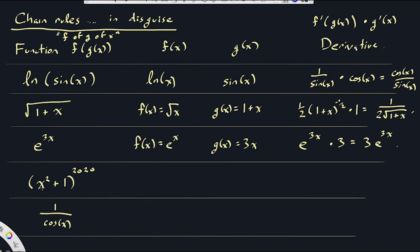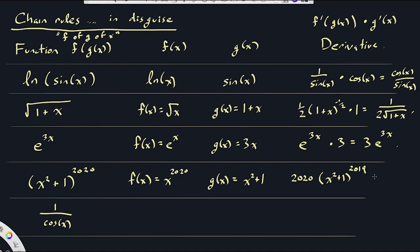For (x²+1) to the 2020th power: first compute x²+1, then raise to the 2020th power. So f(x) = x^2020 and g(x) = x²+1. The derivative is 2020 times (x²+1) to the 2019th power, times the derivative of g which is 2x. Simplifying: 2 times 2020 is 4040, so it's 4040x times (x²+1) to the 2019.